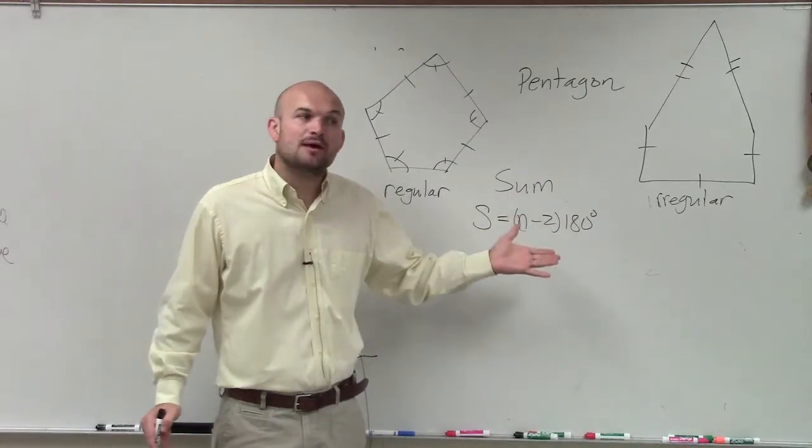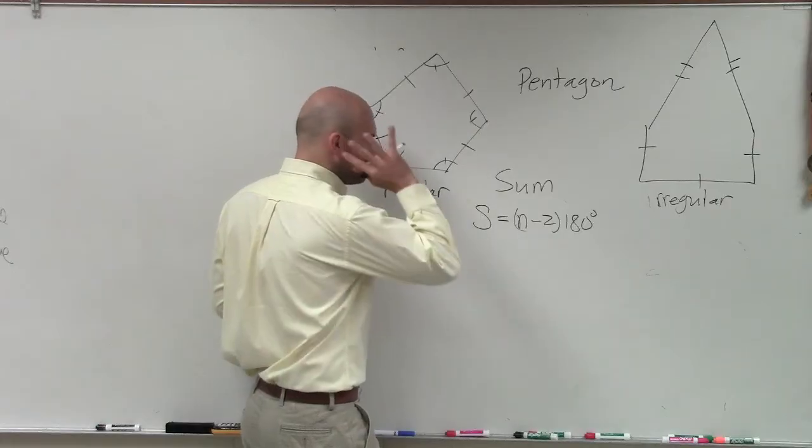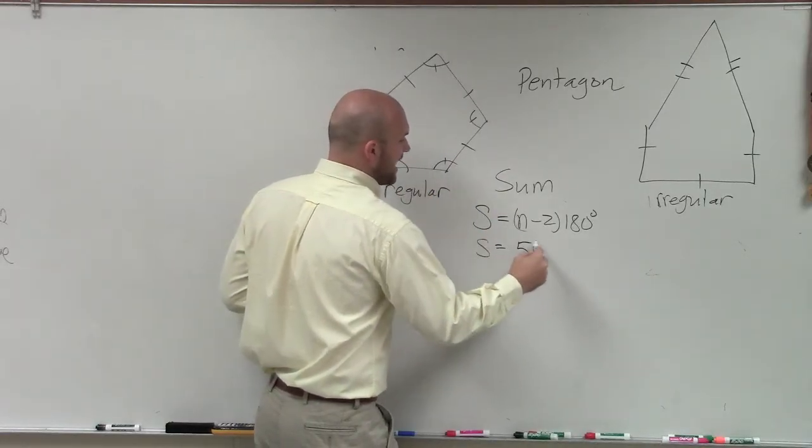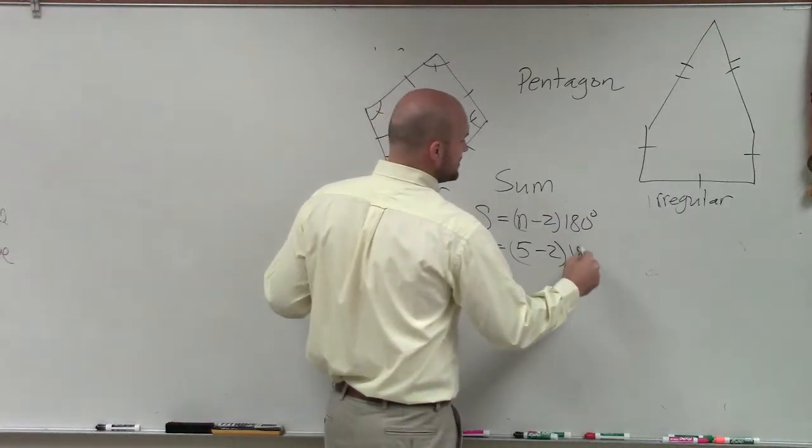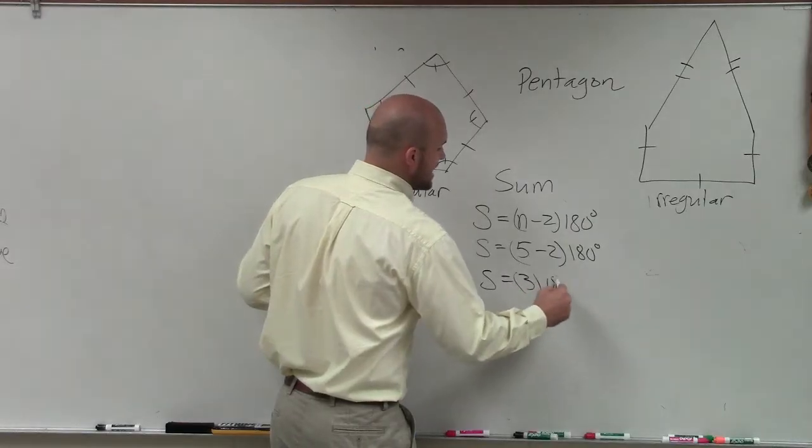Well, remember, n represents the number of sides. So we say a pentagon has how many sides? Five. So we say S equals 5 minus 2 times 180 degrees. So S equals 3 times 180.